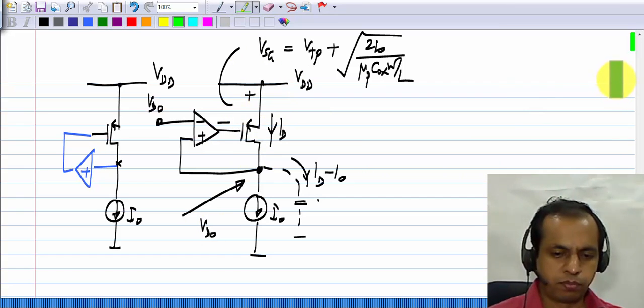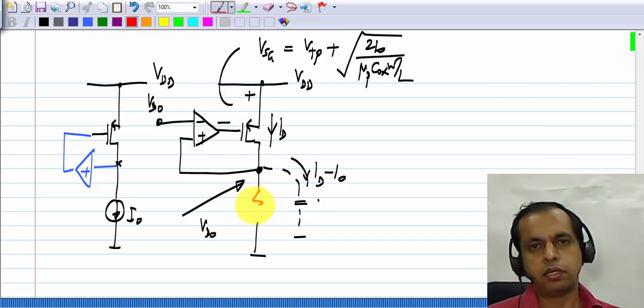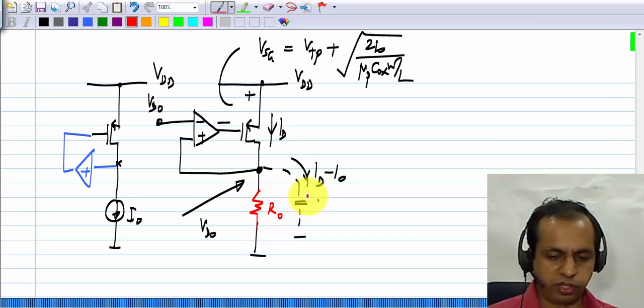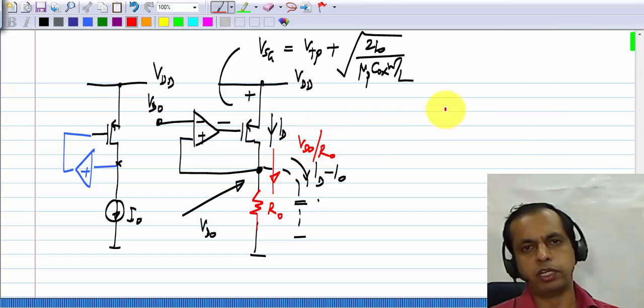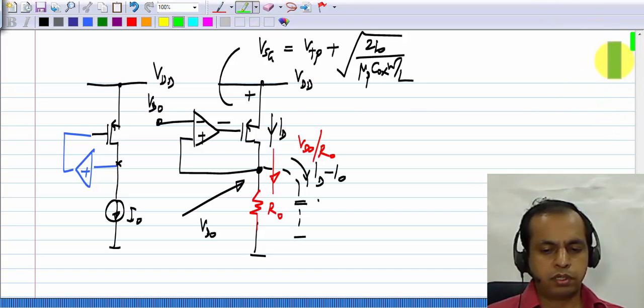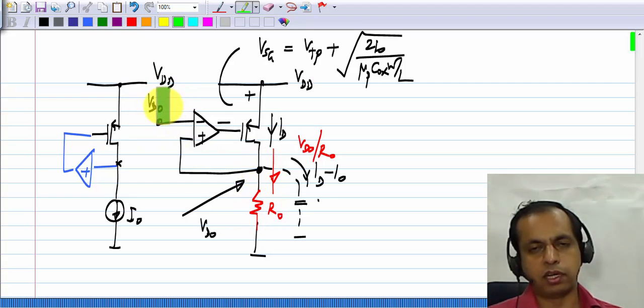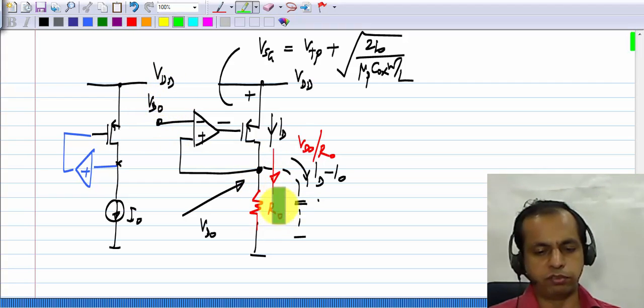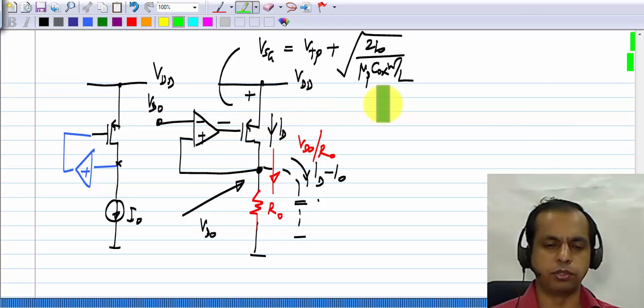So now, if you replace this current source with the resistor R naught, the current flowing here will be V D 0 by R naught. And so, if this voltage is precisely fixed, then this current is also precisely fixed. If the voltage and the resistance are precise, the current will be precise. Now, you can use a precision resistor here, because it is just one resistor, and with this one resistor, you get accurate current sources all over the chip.